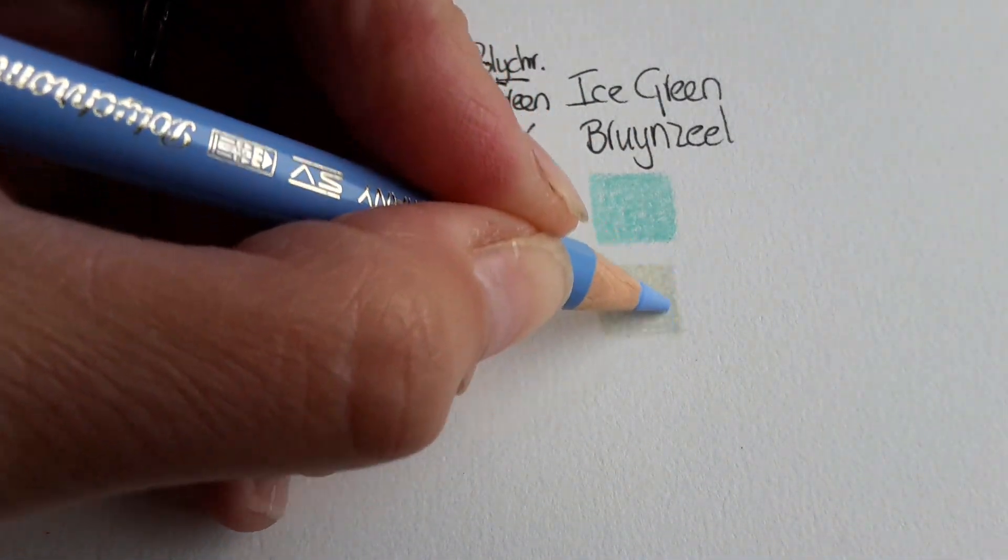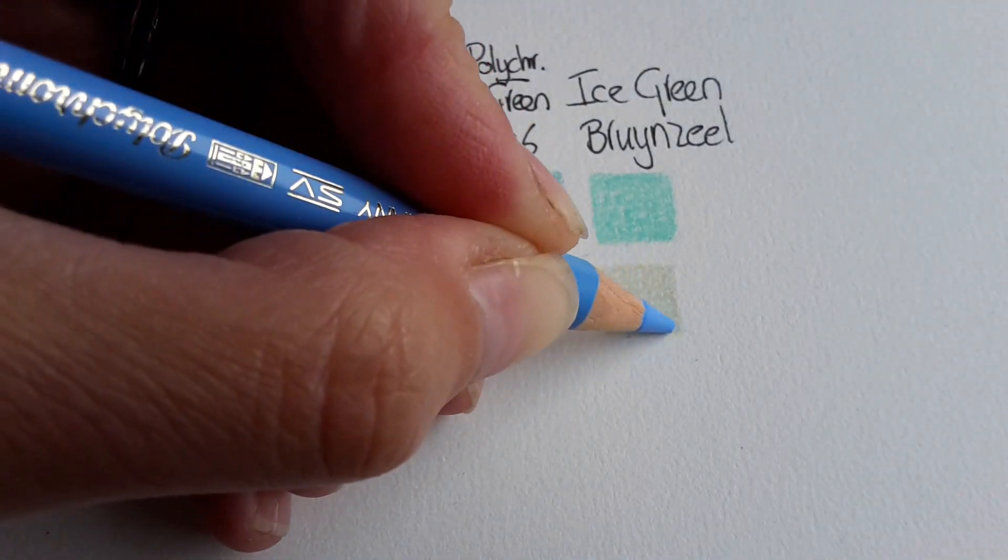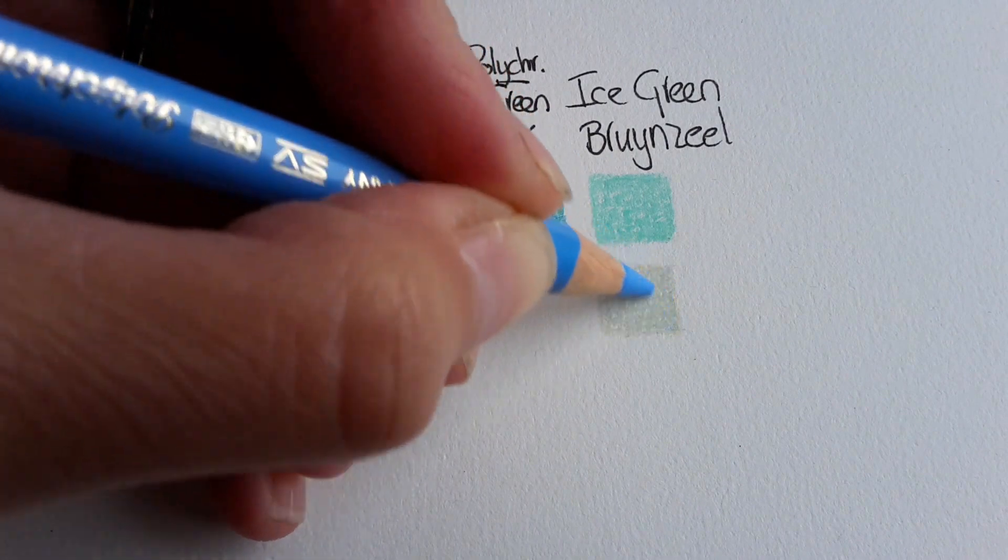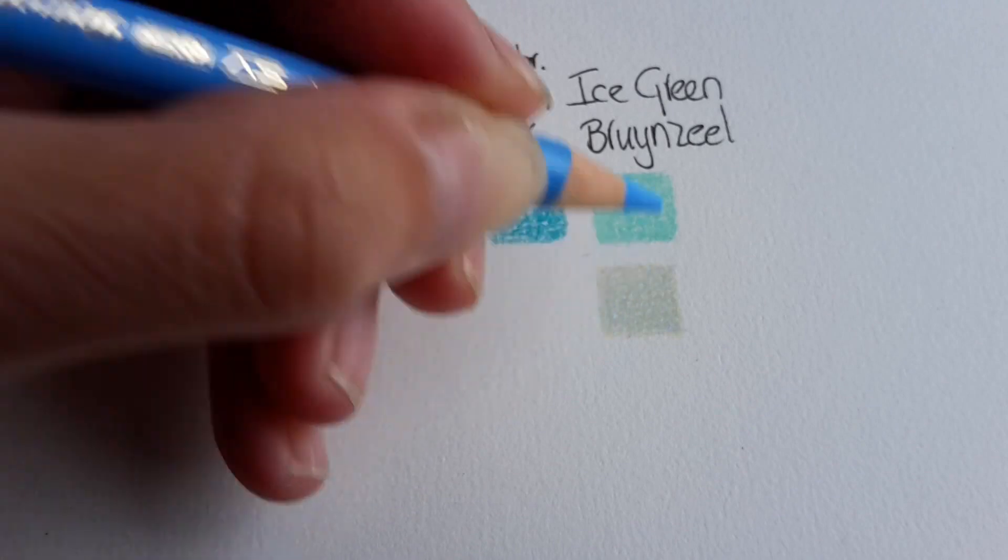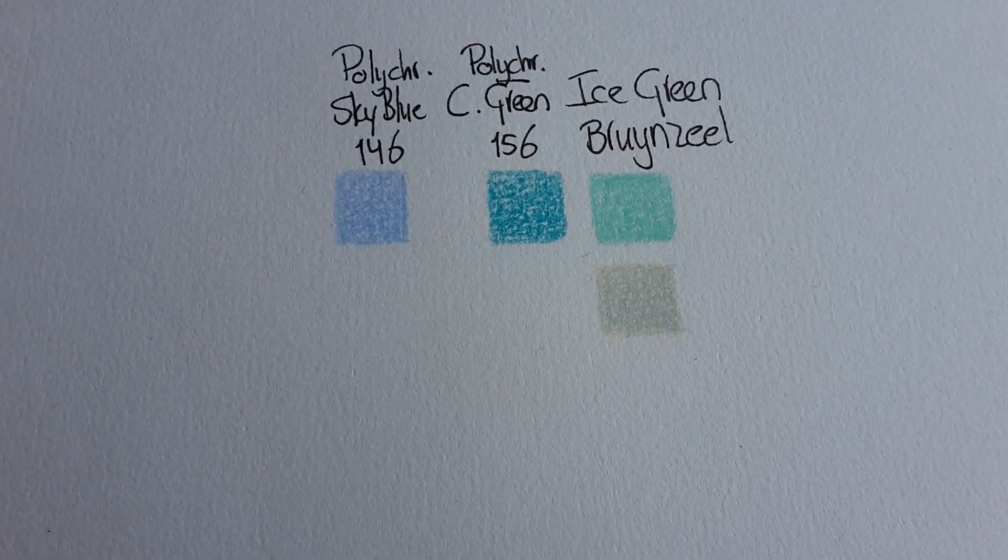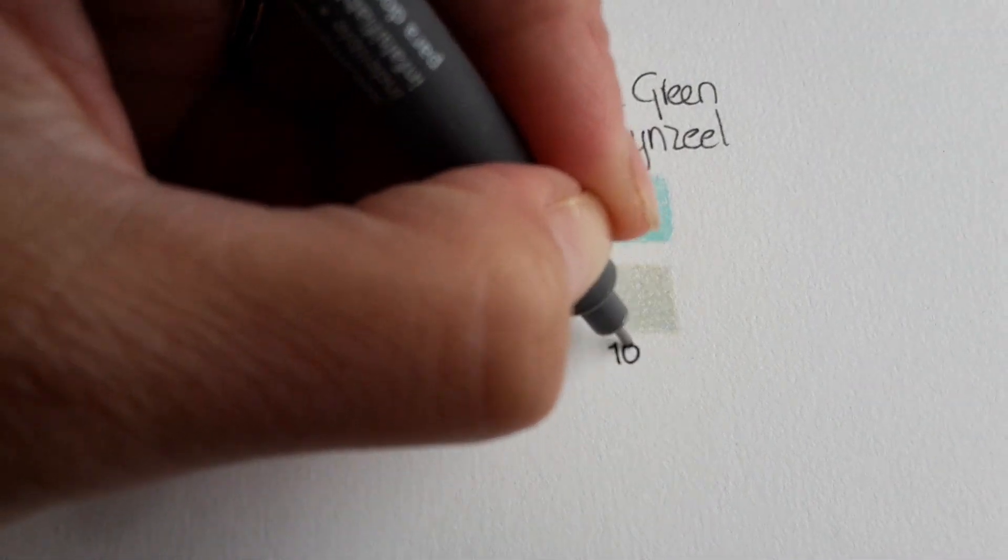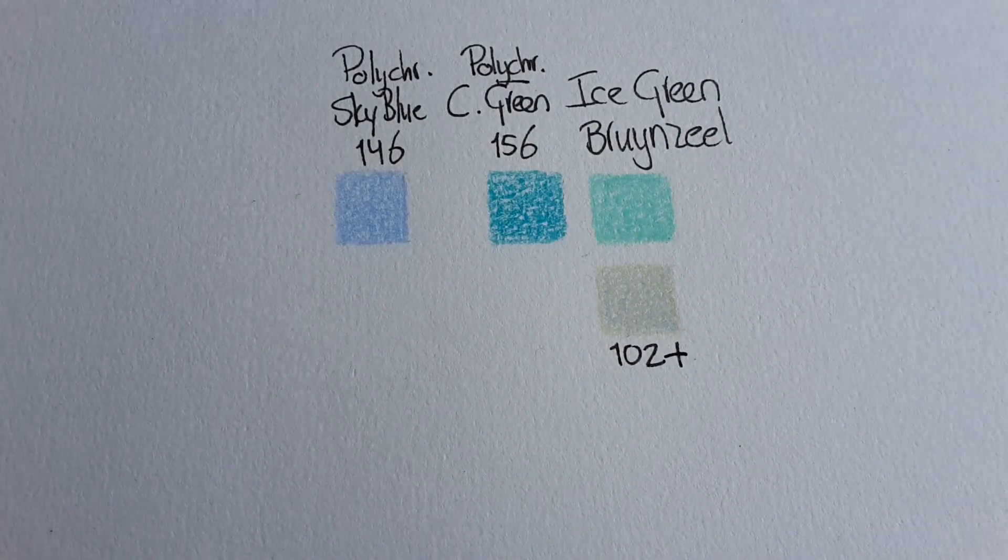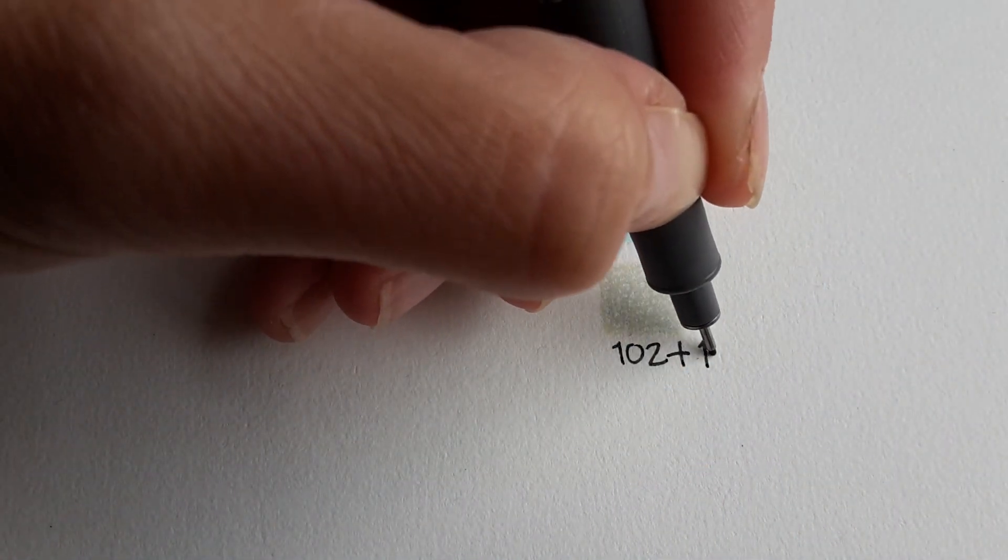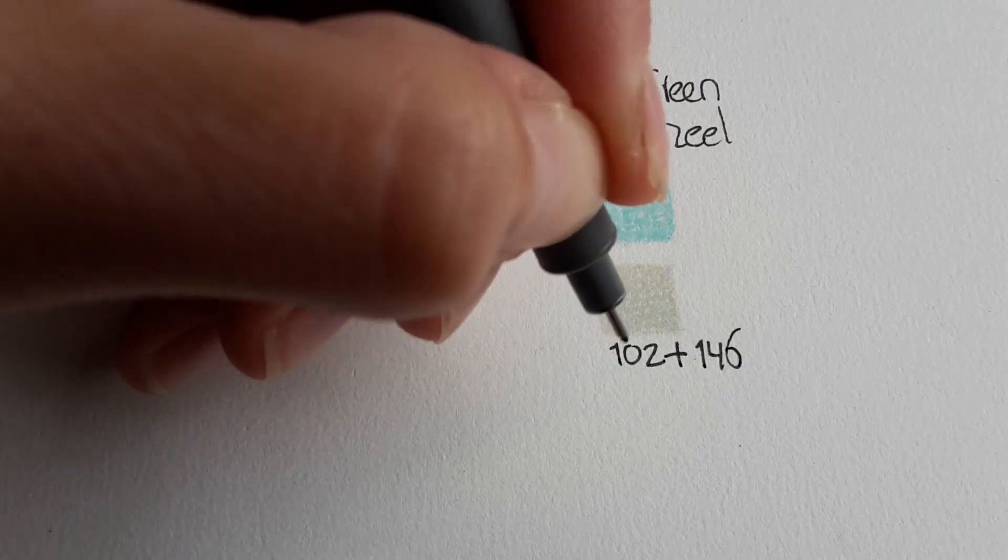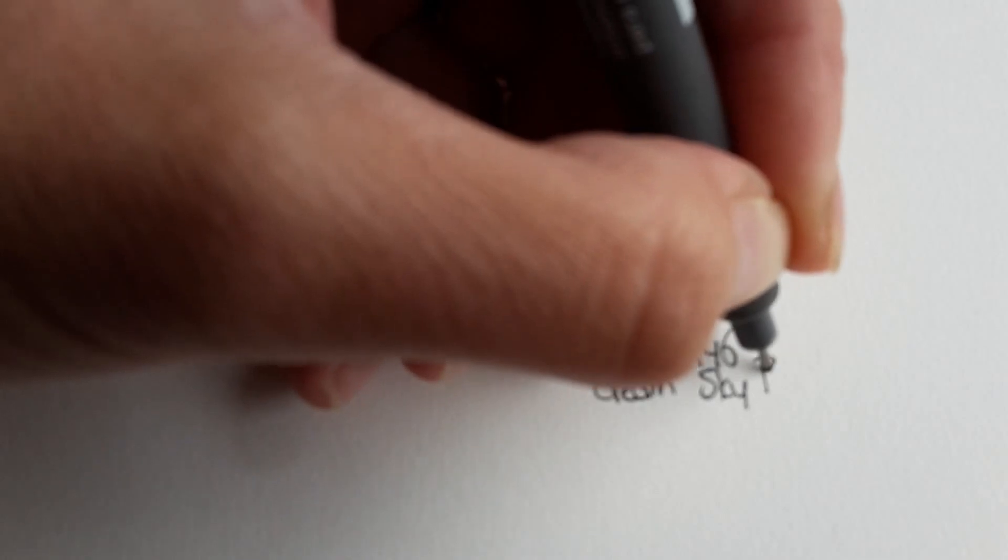I'm putting several layers on top of each other. So this is 102 plus 146, and 102 is cream and this is sky blue.